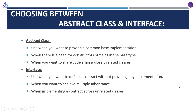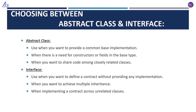Now let's talk about when to choose each. Use an abstract class when you want to provide a common base implementation, when there is a need for constructors or fields in the base type, or when you want to share code among closely related classes. Use an interface when you want to define a contract without providing any implementation, when you want to achieve multiple inheritance, or when implementing a contract across unrelated classes.